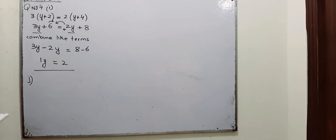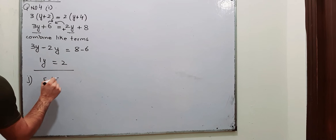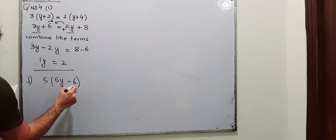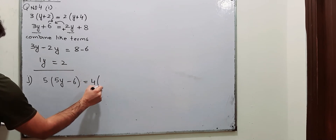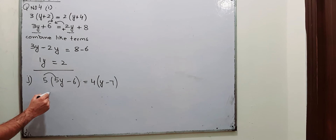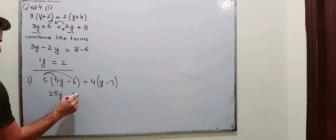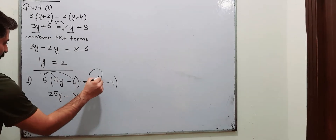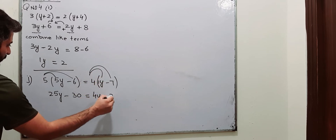So this is the answer for part number i. Next is part number j, which says 5 into 5y minus 6, that is equal to 4 into y minus 7. First of all, multiply 5 by 5y — it will become 25y. Now multiply 5 by 6 — it will become 30. Now 4 into y is 4y, 4 into 7 is 28.